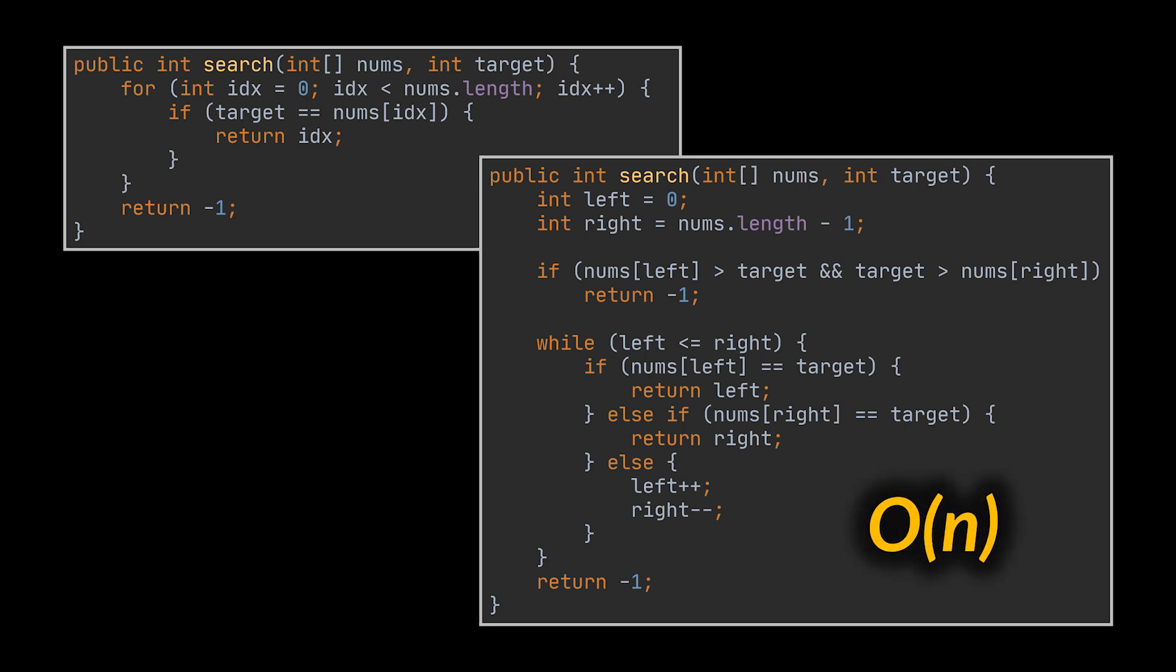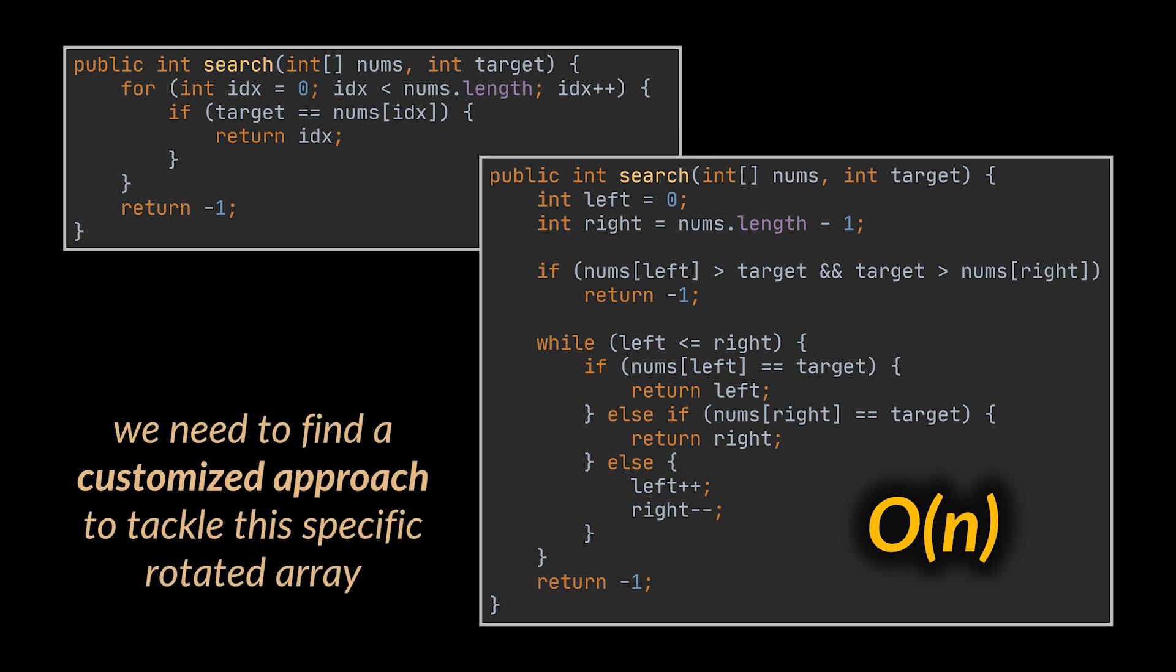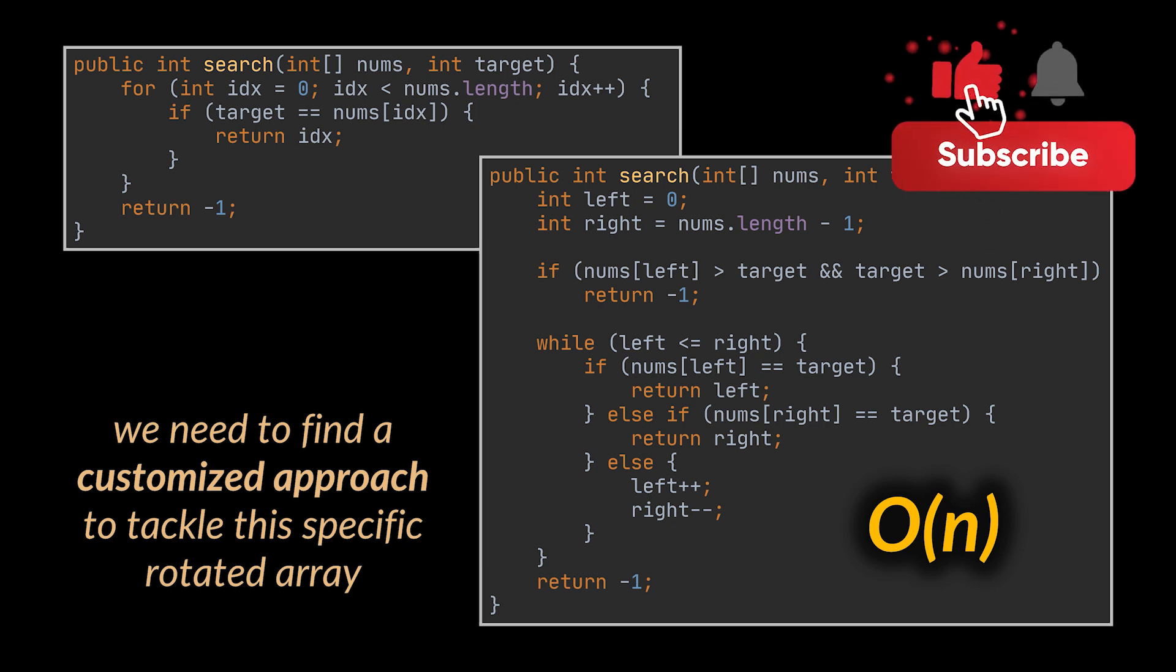Great, but that's not what the question is about. Both these solutions are linear in time regardless of the approach you picked. Additionally, we didn't even make use of the rotation criteria provided to us by the interviewer. These solutions work for any array, not just this one. What we need to find is a customized approach to tackle this specific rotated array, and that is exactly what the interviewer is looking for. Remember, always try to make use of and leverage constraints given to you by the interviewer as much as possible.